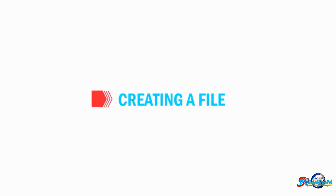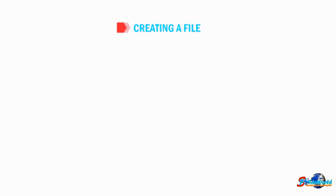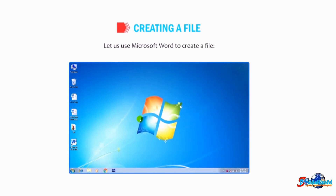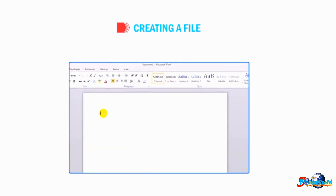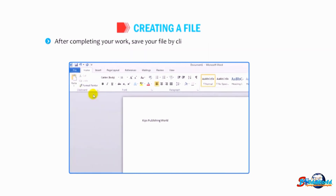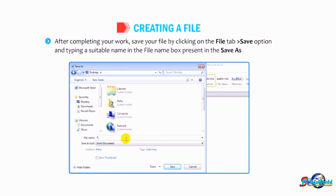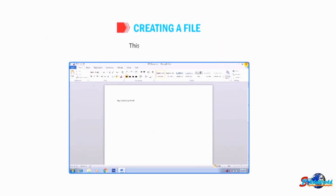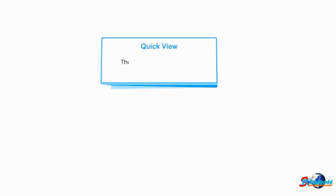Let us first understand how to create a file. The most common method is by using any application software. Let us use Microsoft Word to create a file. Open Microsoft Word — a blank page is displayed on the screen. Start typing text on the blank page. After completing your work, save your file by clicking on the File tab, then the Save option, and typing a suitable name in the file name box in the Save As dialog box. This creates a new file. The shortcut to create a new file is Control plus N.